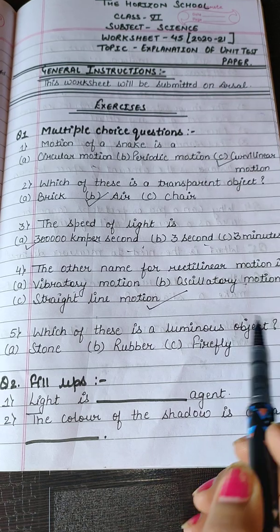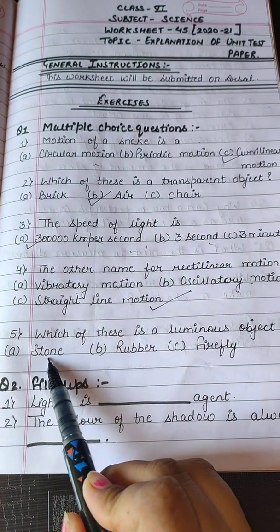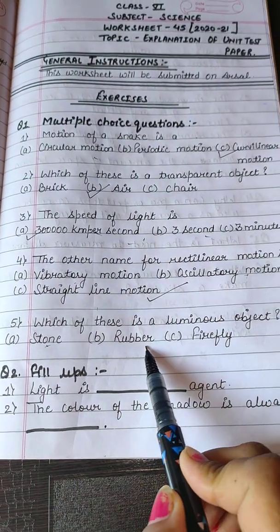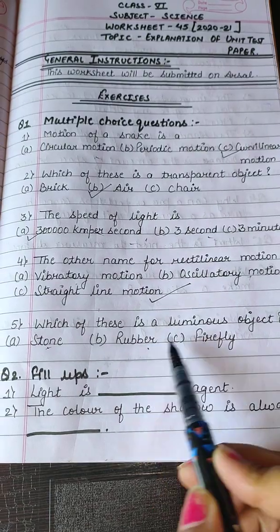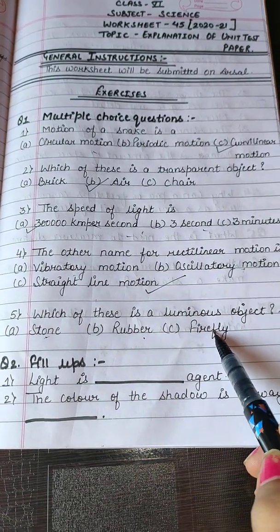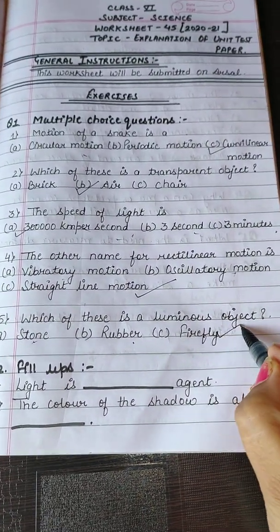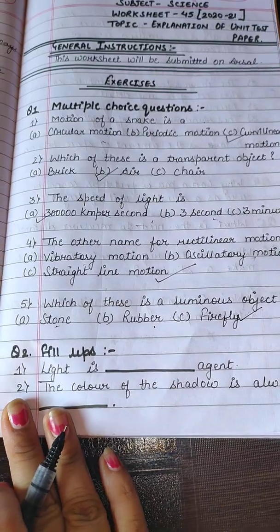The next question is: which of these is a luminous object — stone or firefly? Stone is a non-luminous object. Firefly is a natural luminous object, so the answer is firefly.